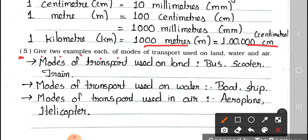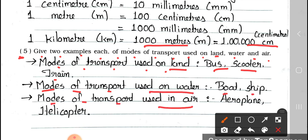Question 5: Give two examples each of modes of transport used on land, water, and air. Answer: Modes of transport on land — bus, scooter, and train. Modes of transport on water — boat and ship. Modes of transport in air — aeroplane and helicopter.